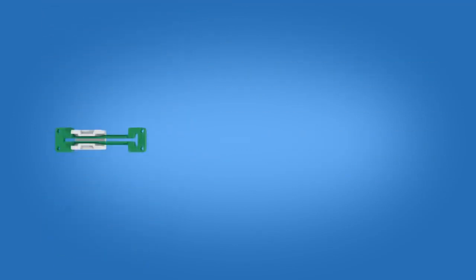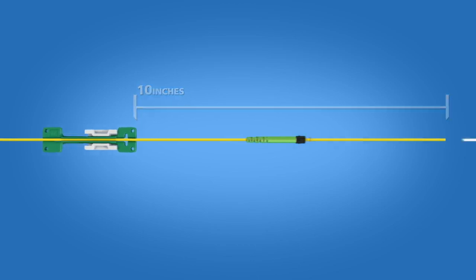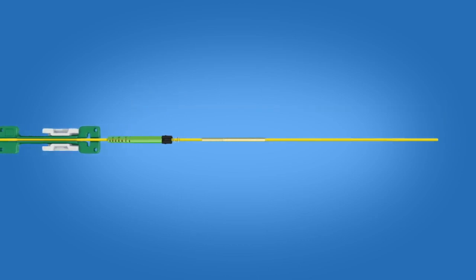Begin by placing the cable into the three millimeter cable clamp approximately 10 inches from the end of the cable and engage the clamp. Slide the boot unit and the protective sleeve onto the cable.